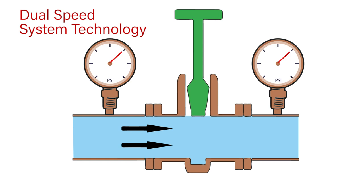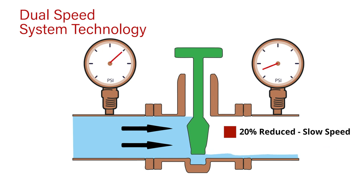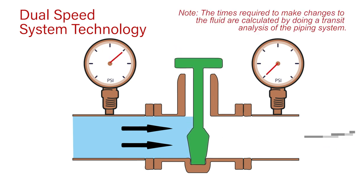This system will allow the operator to close most of the valve stroke, example 80%, at a fast speed, and then reduce the speed in the remaining 20% to ensure energy dissipation. Note that optimal closing times are calculated by doing a transient analysis of the piping system.